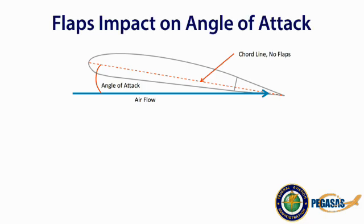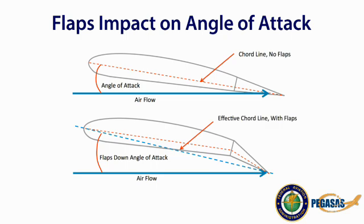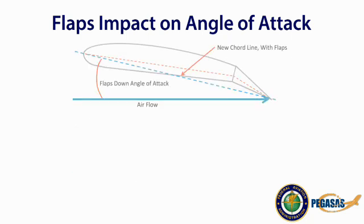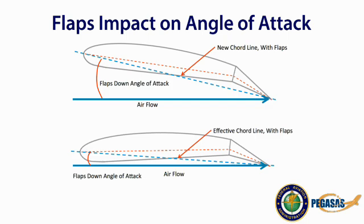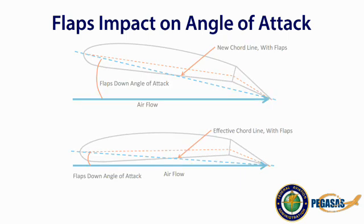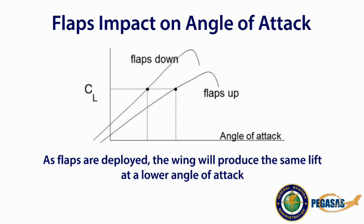This is a wing with the flaps in the retracted position. When the flaps are extended, it changes the effective chord of the wing, which increases the angle of attack and results in a momentary increase in lift. To compensate for this new chord line, the pilot will normally adjust the elevator pressure to dissipate this momentary increase in lift to maintain altitude. The result is that an aircraft with deployed flaps can produce the same lift at a lower angle of attack until the descent profile is initiated. As the graph shows, flaps allow us to maintain the same coefficient of lift at a lower angle of attack, which allows for variations in descent profiles.